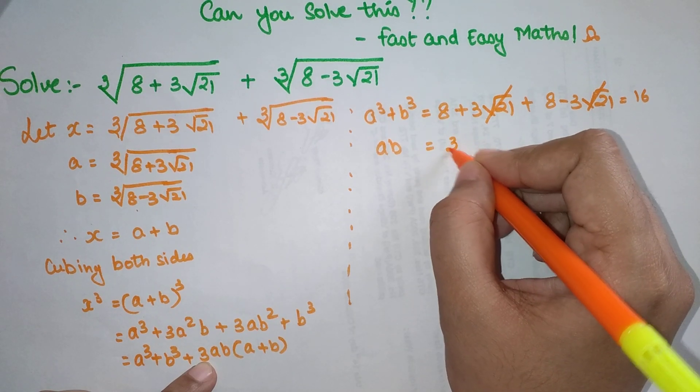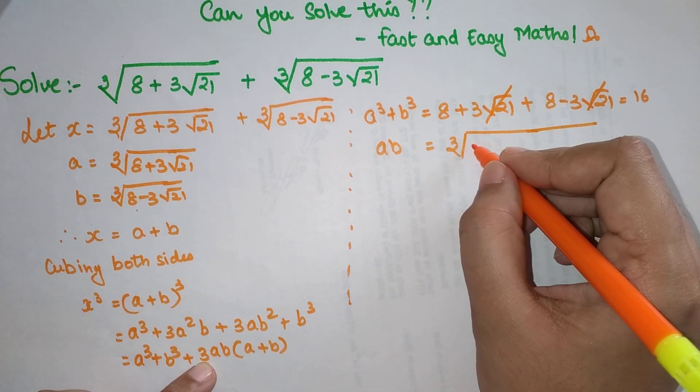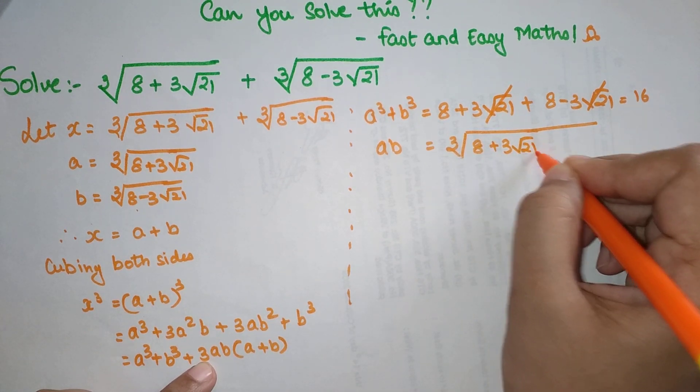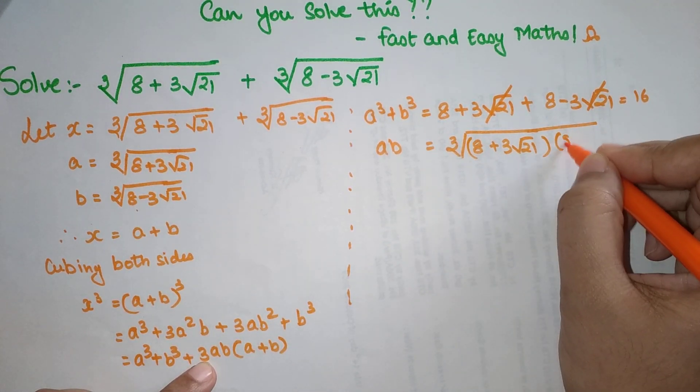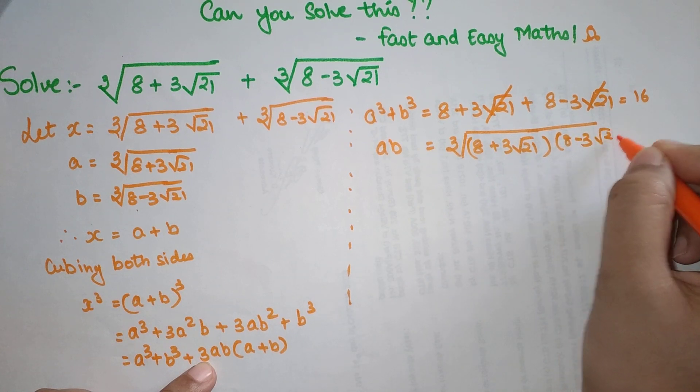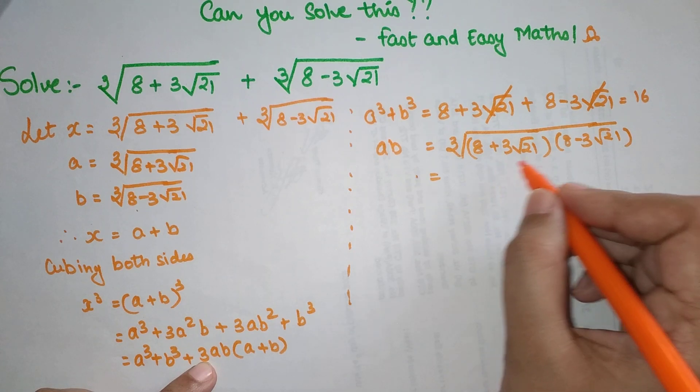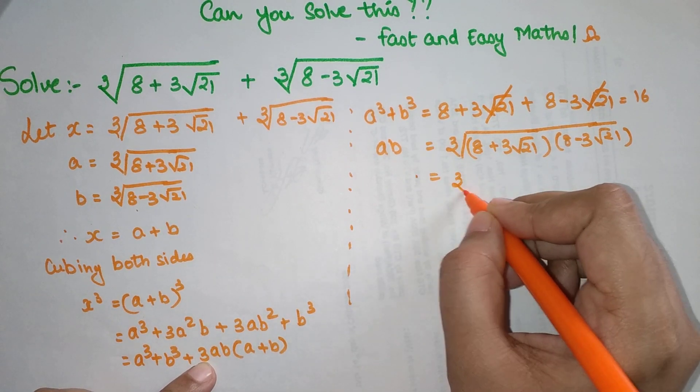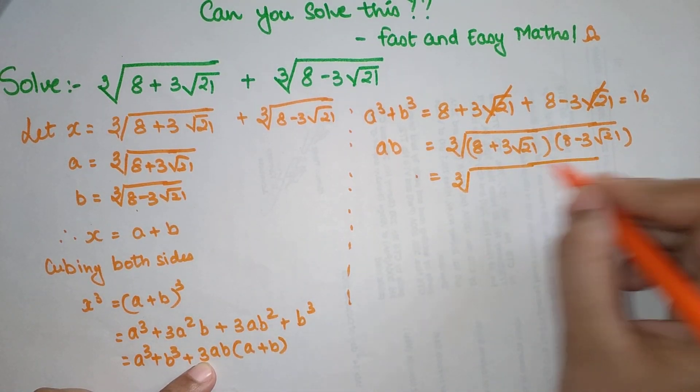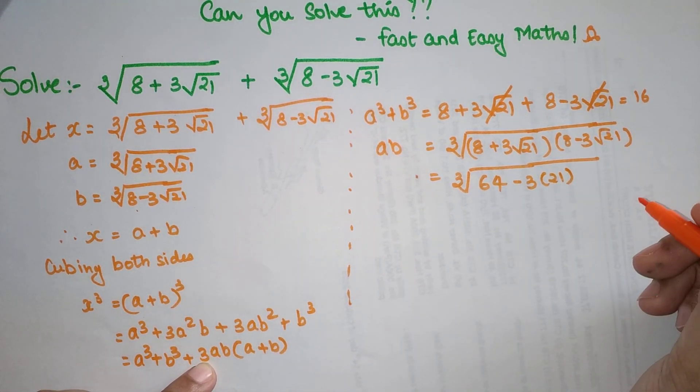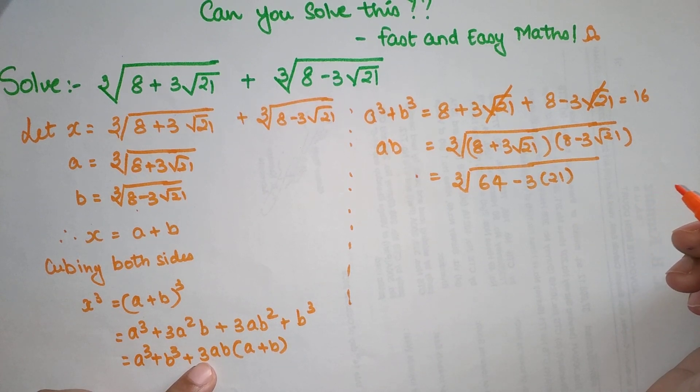When I actually multiply a into b, I am getting cube root of 8 plus 3 root 21 and 8 minus 3 root 21. Now this is actually nothing but a plus b and a minus b.